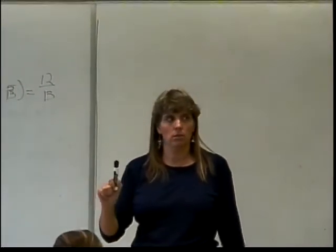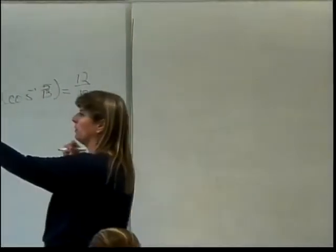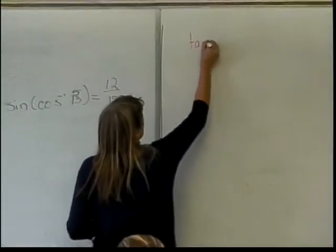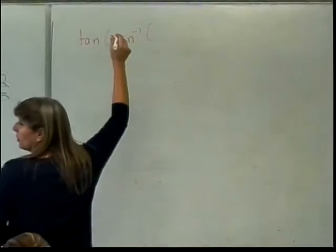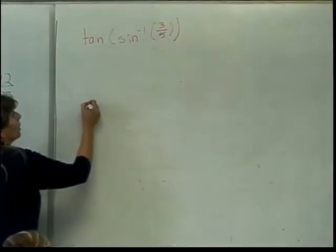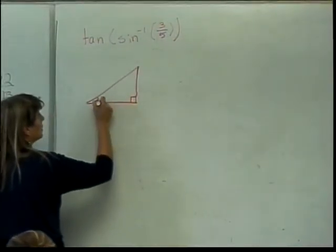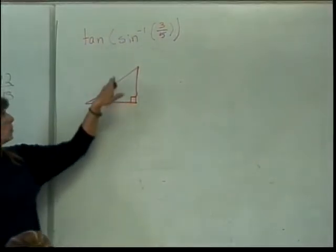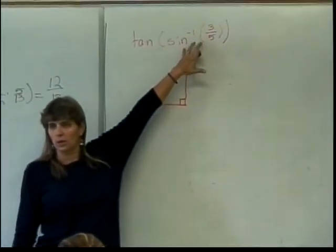So far so good? All right, let's do the same thing but now for the other piece. Tangent of the sine inverse. So the tangent of the sine inverse of what's this, 3 fifths? So here's my triangle. So if this is the angle that comes out as the sine inverse of 3 fifths, what does that mean about the 3 and the 5?